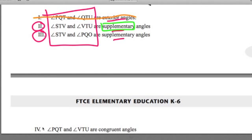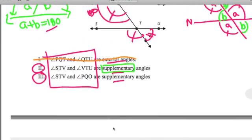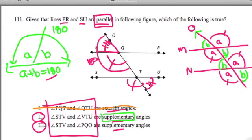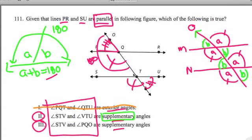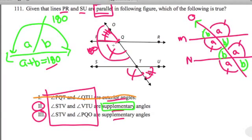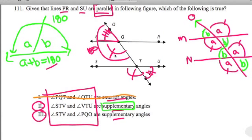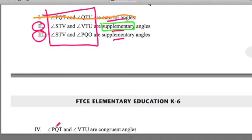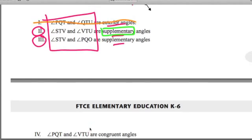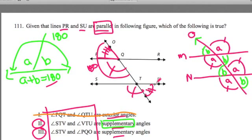All right, there's one last one here. It's PQT and VTU are congruent angles. That is, that's not, that one's not true. I'll let you go double check that. You can go back. Is PQT equal to VTU? Where's VTU? No, they're not equal. They're supplementary, but they're not equal.